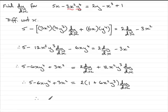Now, all that's left to do to make dy/dx the subject is just to divide both sides by 2 lots of 1 + 6x²y³. So that's going to give (5 - 6xy⁴ + 3x²) all divided by 2(1 + 6x²y³).